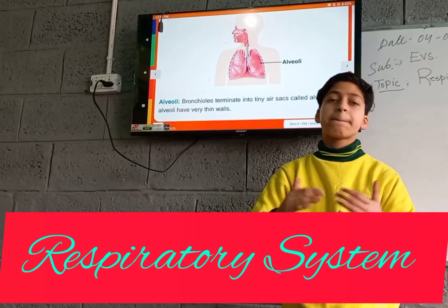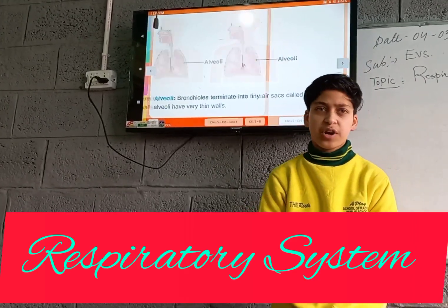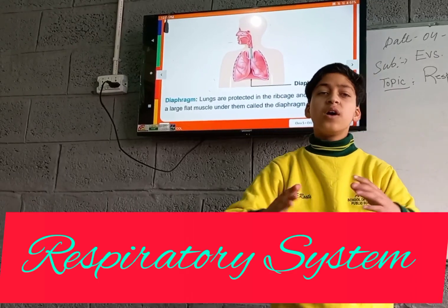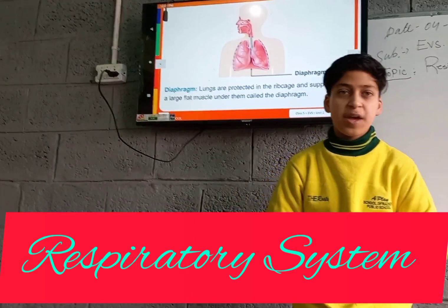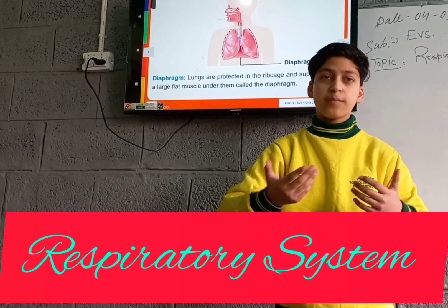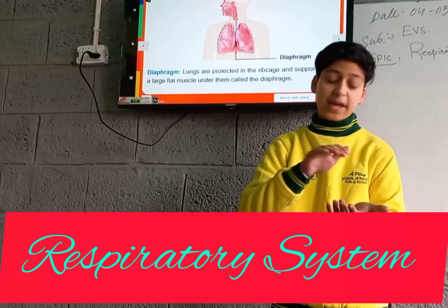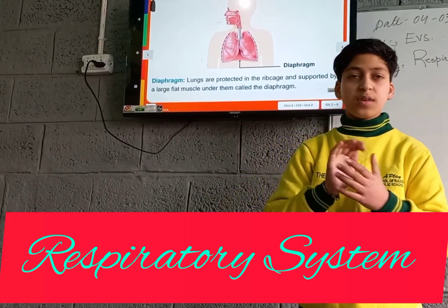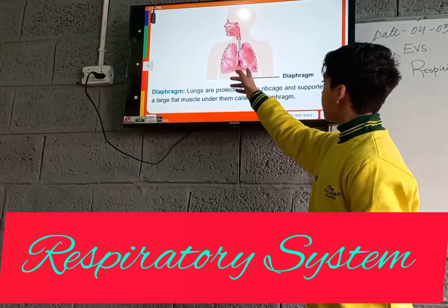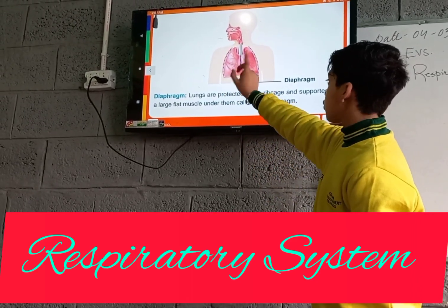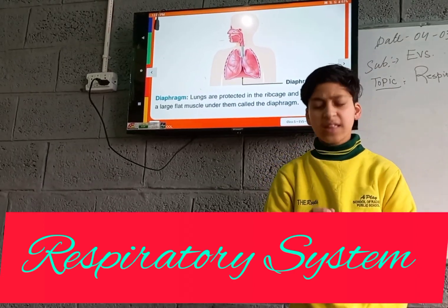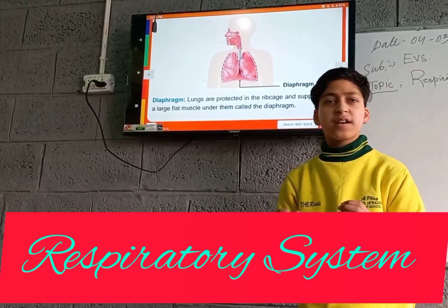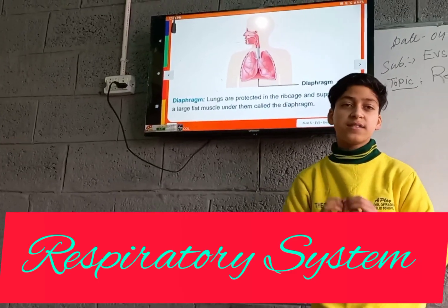The diaphragm is a muscular structure. The lungs are protected from the left, right, and front by the rib cage. The diaphragm protects the lungs from the bottom and also separates the respiratory system from the digestive system below it. Because the lungs are spongy due to the tiny alveoli air sacs, they expand when we inhale and return to their original form when we exhale.